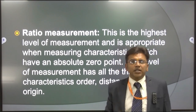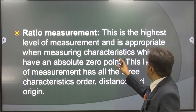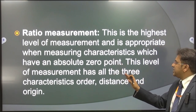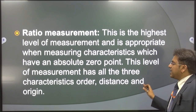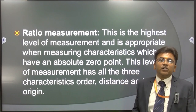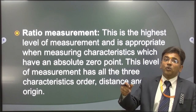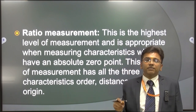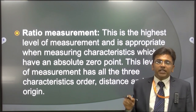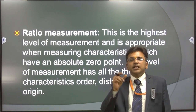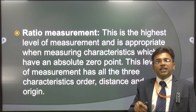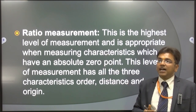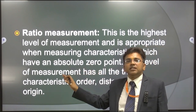The last is ratio measurement, the highest level of measurement, appropriate when measuring characteristics that have an absolute zero point. This level has all three characteristics: order, distance, and origin. For example, if a scale goes 0–5, 6–10, 11–15, 16–20, there is a specific ratio of 5, an origin at zero, and a positive direction. Because all three properties are present, ratio measurement is considered best for research.